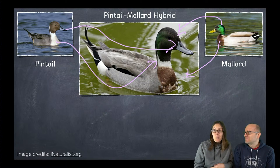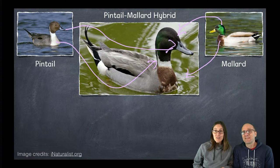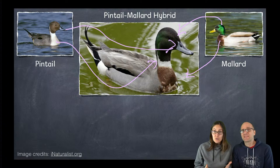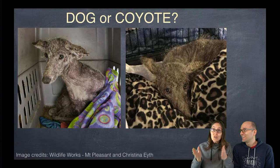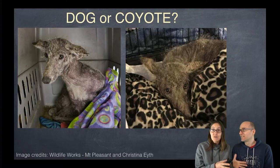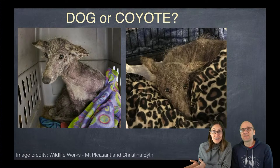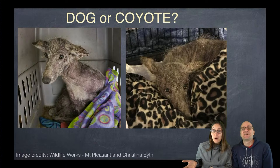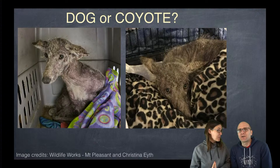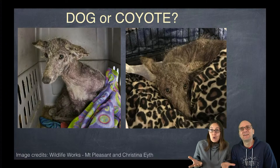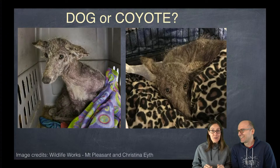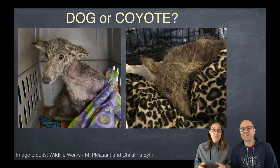A recent example of this question about what a species is popped up in the news just last week. A person found an animal that needed help in Pennsylvania. It was sick with mange, which causes a lot of its fur to fall out. It was hungry and cold, and this person rescued it. But now that the animal is safe, people can't decide if it's a coyote or a dog. If it's a coyote, it goes to the wildlife center until it's strong enough to be released back to the wild. If it's a dog, it goes to the animal rescue center until someone adopts it. But what if it's a hybrid?